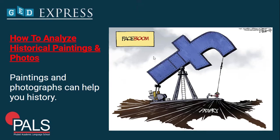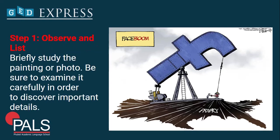Paintings and photographs can help you understand history. Step one is Observe and List. If you are presented with an image, briefly study the painting or photo and be sure to examine it carefully in order to discover the important details — like what images can you see, what is the date — try to find out all the important details.